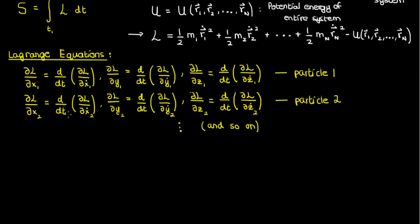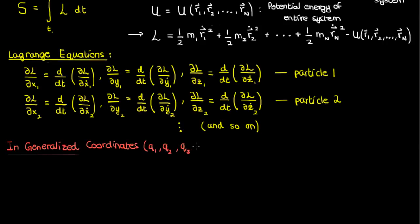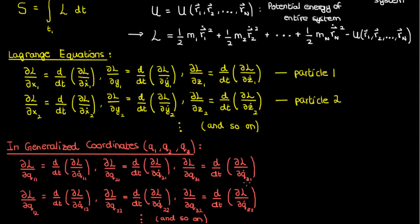We can just as easily extend these Lagrange equations for multiple unconstrained particles to generalized coordinates, where we replace our Cartesian coordinates x, y, and z by the generalized coordinates q1, q2, and q3, which can basically represent any nice enough coordinate system we want — cylindrical coordinates, spherical coordinates, etc. So if we use generalized coordinates for a system of multiple unconstrained particles, here's what we'll have for our Lagrange equations.